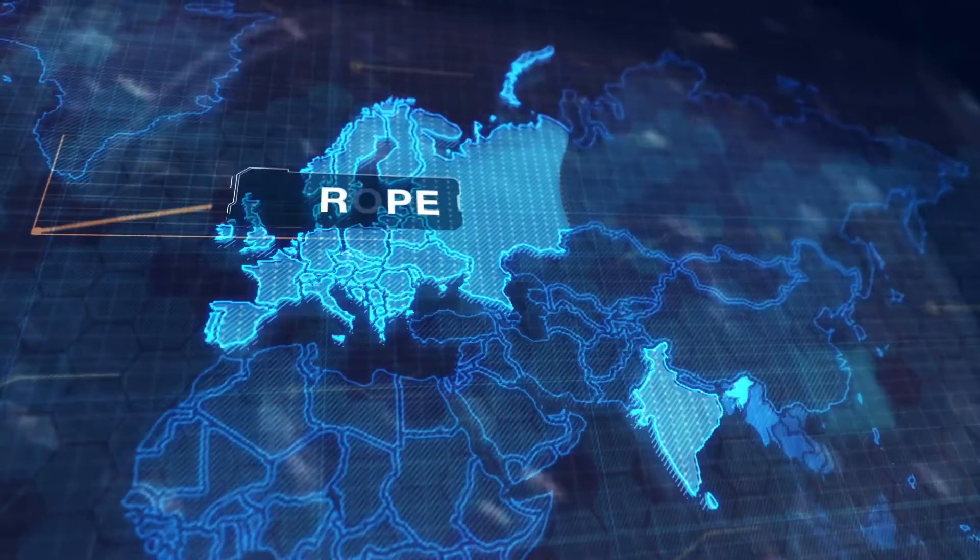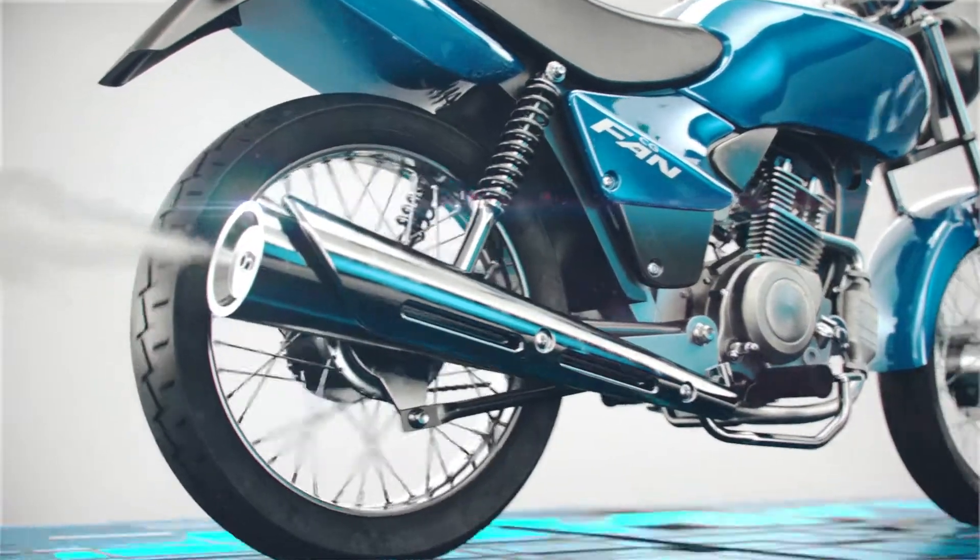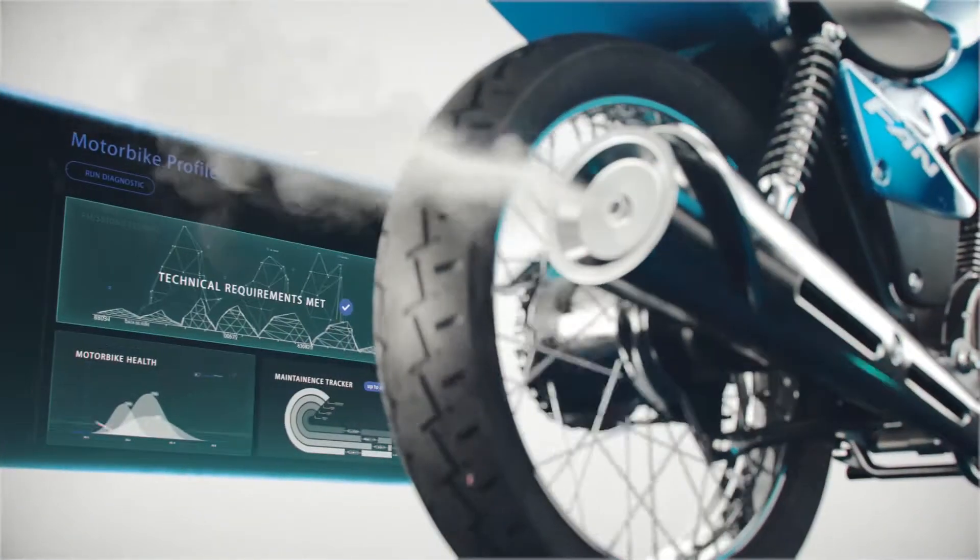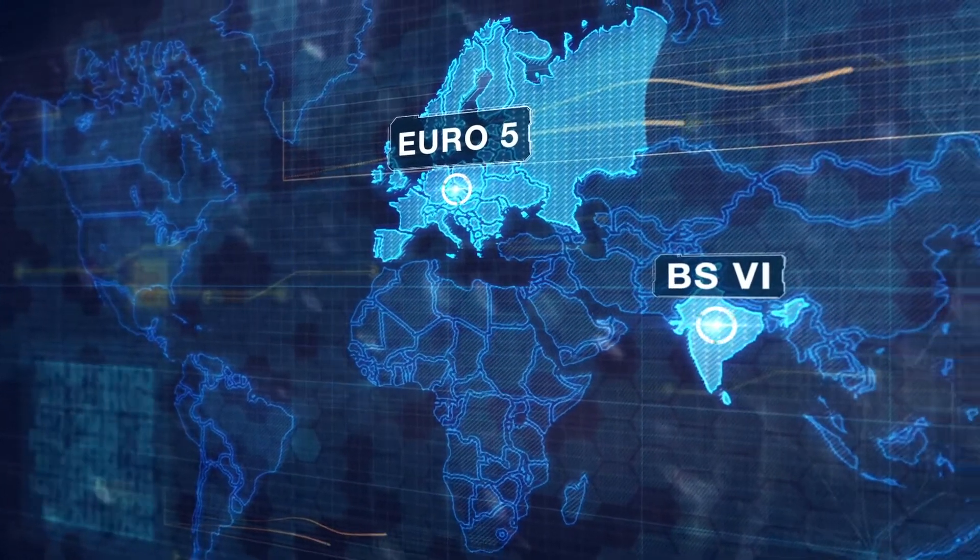In 2020, Europe and India moved forward with the implementation of the world's most stringent emission norms for motorcycles: Euro 5 in Europe and BS 6 in India.